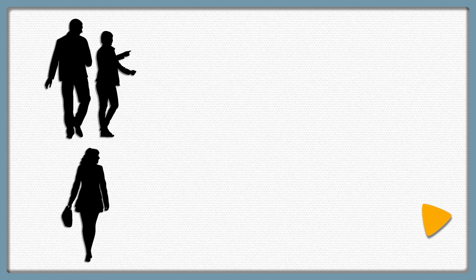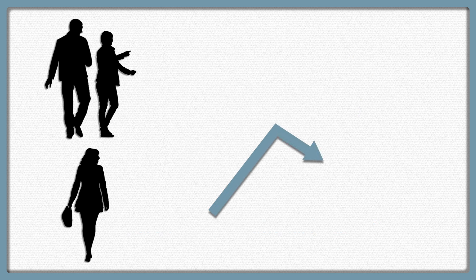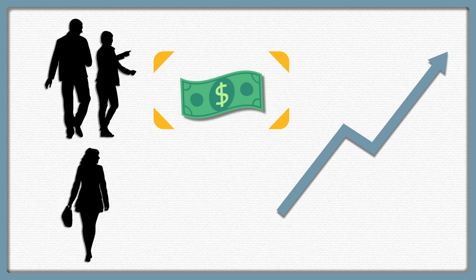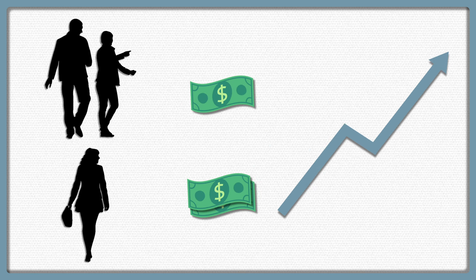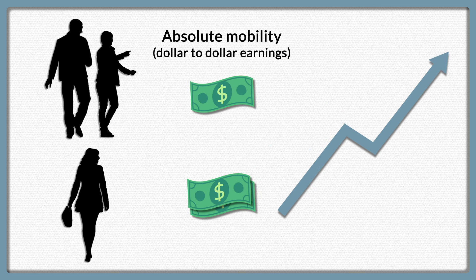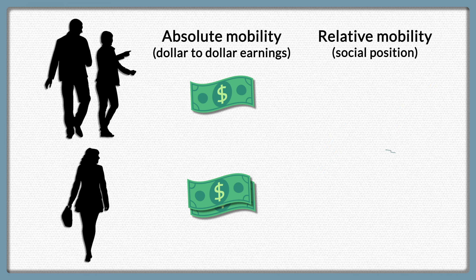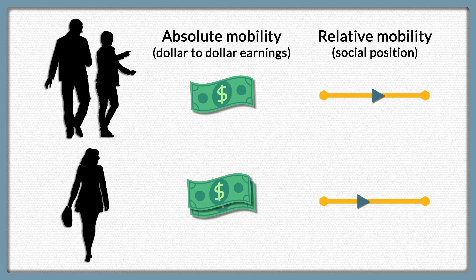When we adjust for inflation and compare someone's present income to their parents' income dollar for dollar, we're looking at absolute mobility. When we measure how someone's position in the income distribution changes over time compared to everyone else in society, that's relative mobility.